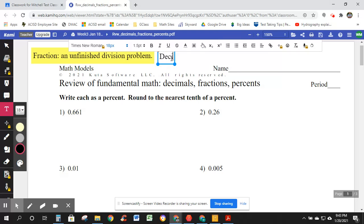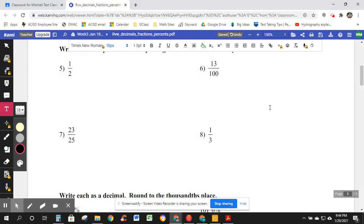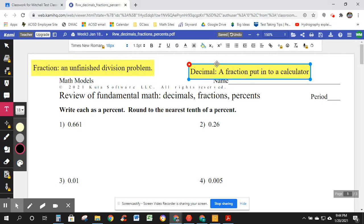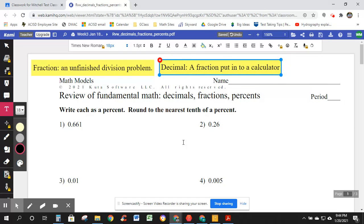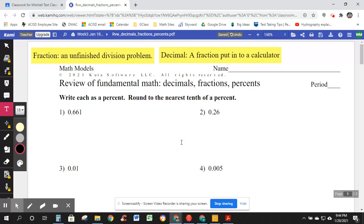Decimal. A fraction put into a calculator. Change that to a color. Now I've got two sitting at the top. That's pretty cool. So that I can just add notes on here if I want to keep this for later. A decimal is a fraction put into a calculator. It gives me a numeric answer for a fraction.